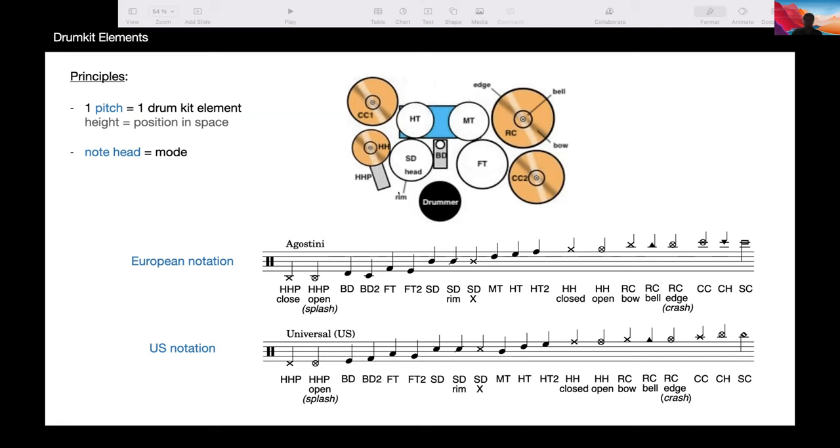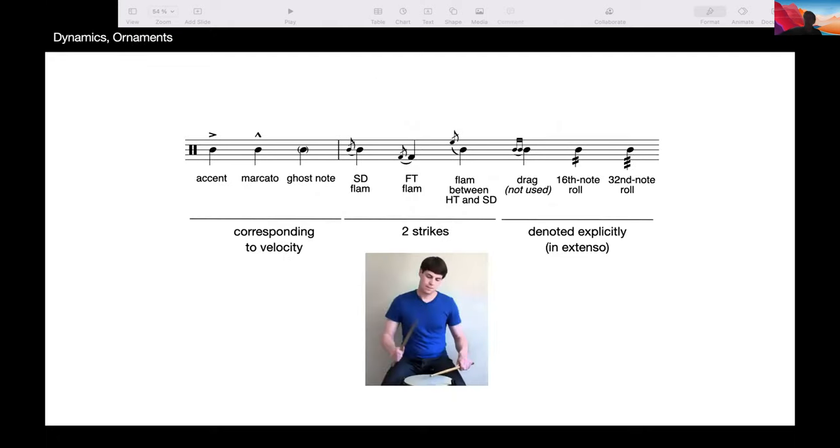So the principle of the notation is that you have one pitch for every element of the drum, which is fixed. The pitch is different in US and European notation. And you have different kind of note heads to represent the different modes, different ways to play. Like when you play on the edge of the cymbal, or when you play on the bow of the cymbal with a cross.